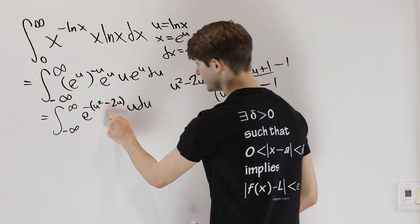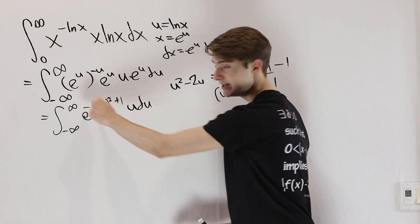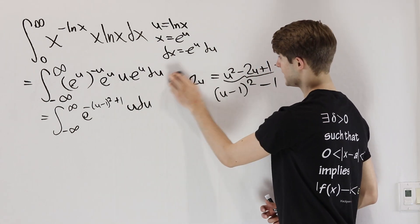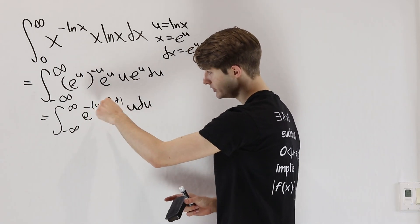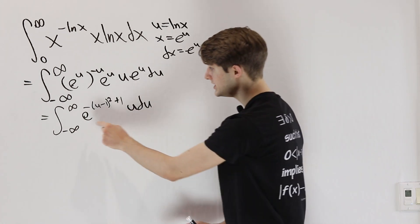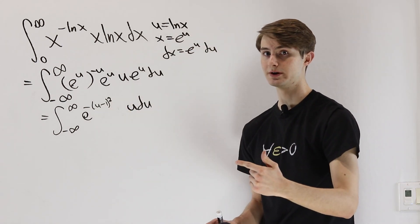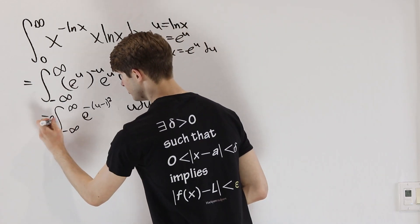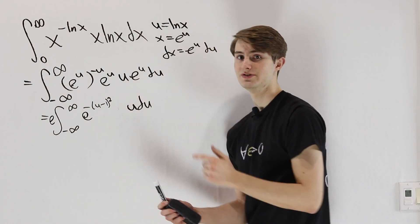We plug this into our integral. Because we had a negative out front already, minus a minus gives us a plus 1 on the outside. So we have e to the negative u minus 1 squared plus 1. We can split up the exponent as e to the negative u minus 1 squared times e to the first power. But e to the first power is just the constant e, so we take that all the way outside the integral. Now we're looking at a much more convenient expression.